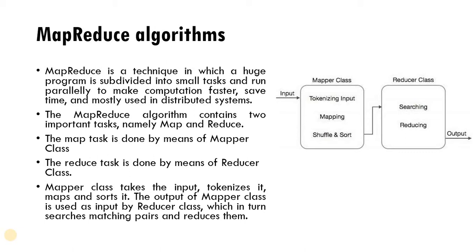Big data contains huge amounts of terabytes of data for processing. To manage that huge data we need to implement a technique which can handle this type of data. Since the program can be too bulky, we introduce the MapReduce algorithm, which divides that huge program into smaller tasks and each task is run in parallel, so we get the same result but the processing time is reduced.